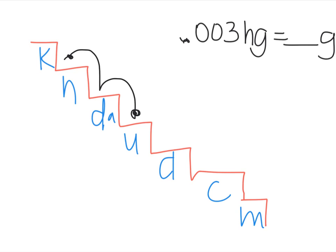So here's my decimal, one, two spaces to the right. So three thousandths of a hectogram is equal to three grams. How'd you do?